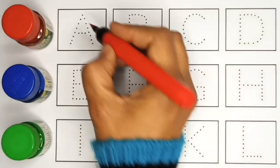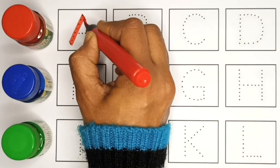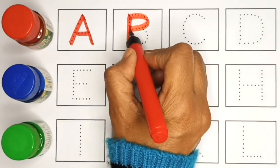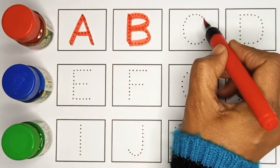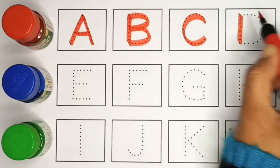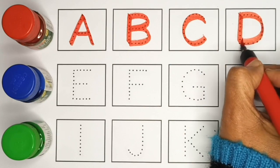Red color. A, A for apple. B, B for ball. C, C for cat. D, D for dog.